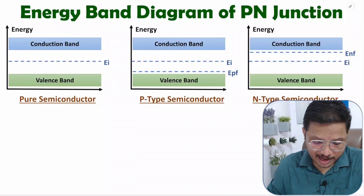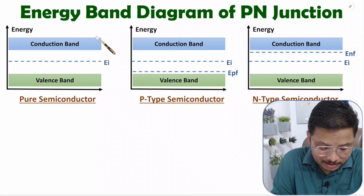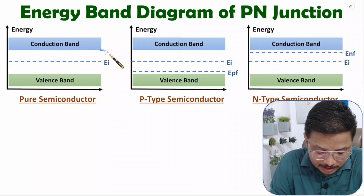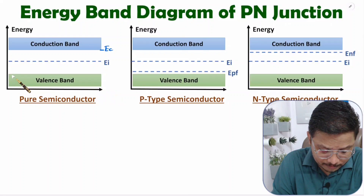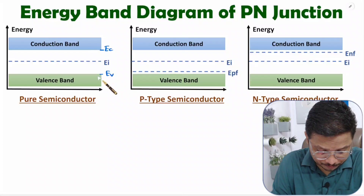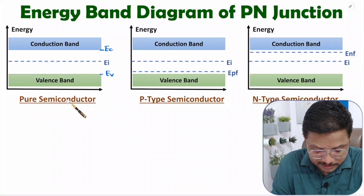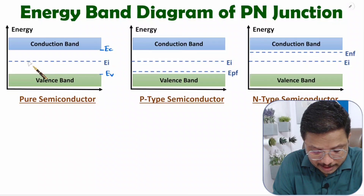If you observe, we are having energy band diagram of your semiconductor material in which this is conduction band. Bottom edge of this conduction band is having energy EC. This is valence band, top edge of this valence band is having energy EV. And if you observe this middle line, that is having energy EI for pure semiconductor material. Fermi energy level is also EI, which is at the middle of EC and EV.